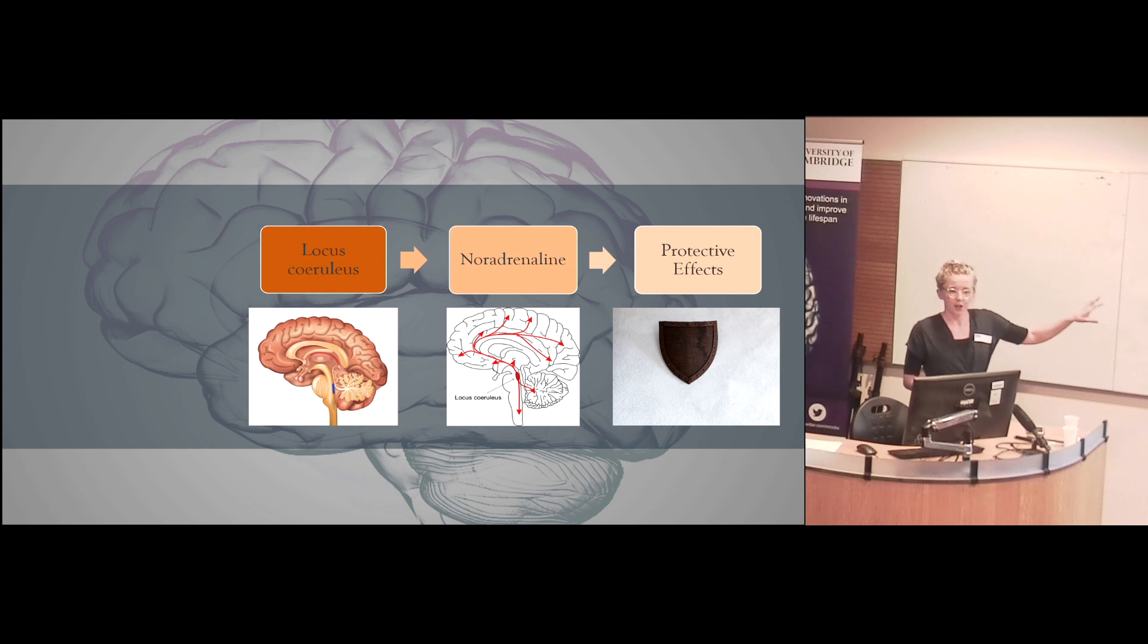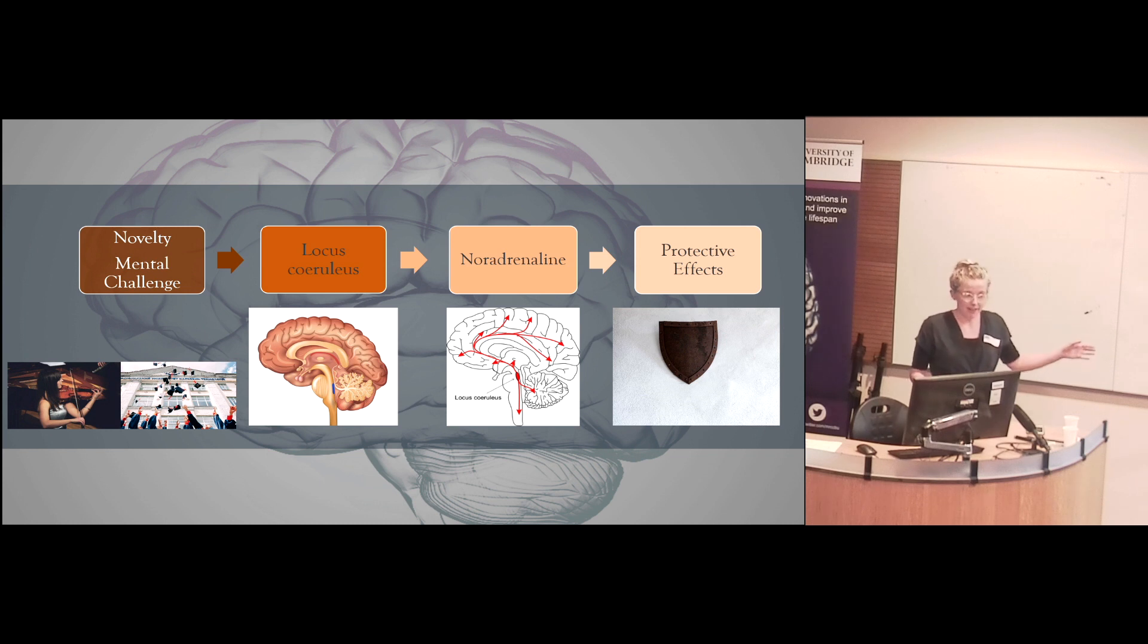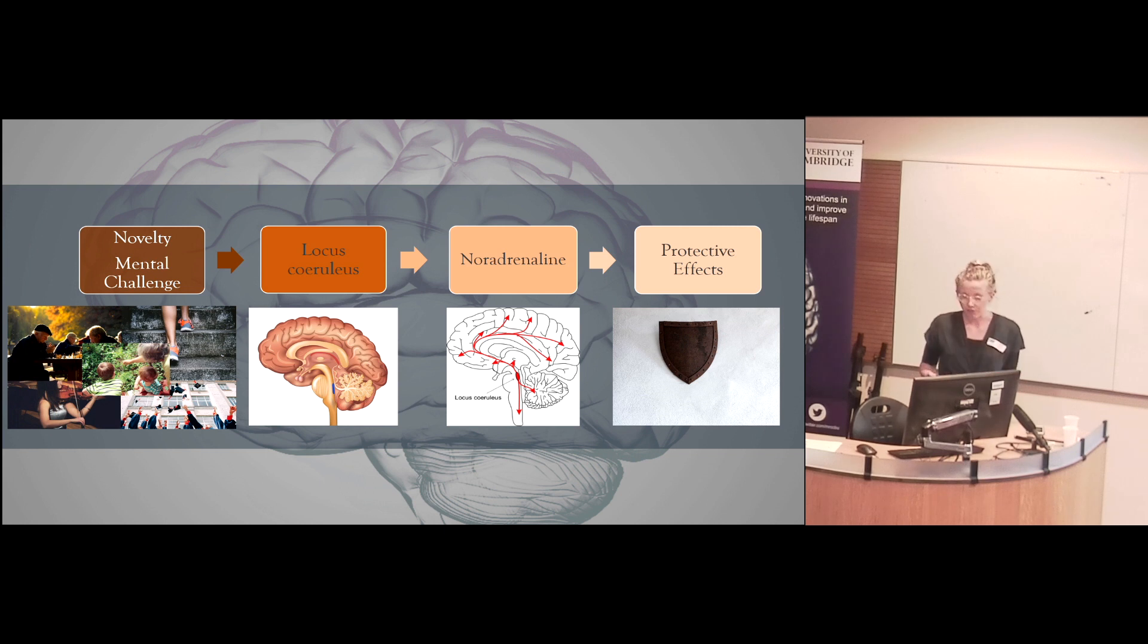The question now is, okay, this might be good. What triggers it? What makes this LC produce this chemical? And what some people are arguing is, it might be novelty and mental challenge. Activities that challenge you. That make you think of things you haven't thought before. That make you do things you haven't done before. So it's possible that education, occupational complexity, but also this engaged lifestyle, what they have in common is that they can challenge you. And therefore, it might be that that continuous challenge throughout a person's life might be what's at least in part explaining healthy aging in this way.